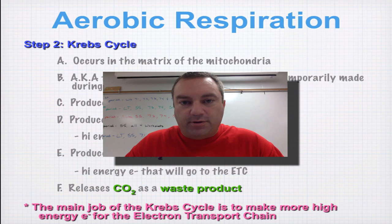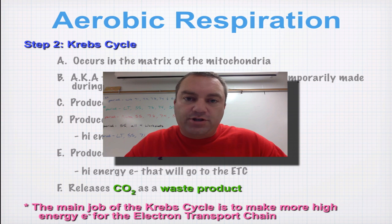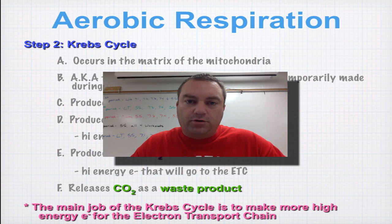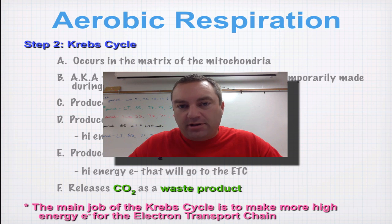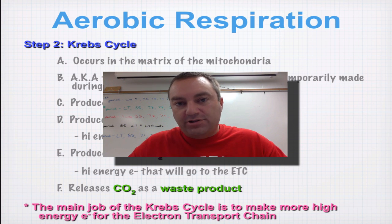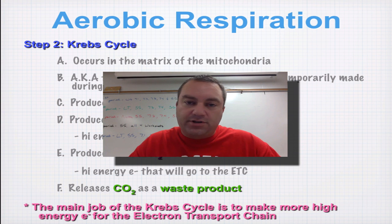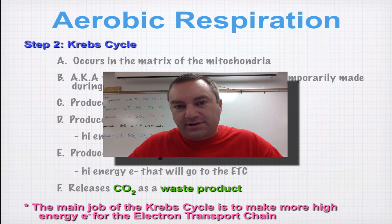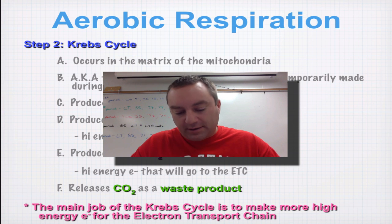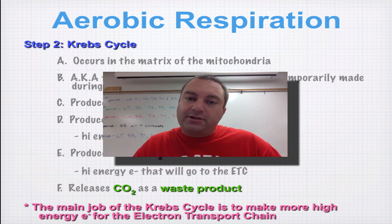Welcome to episode number four from our chapter nine series of screencasts about cellular respiration. In this episode we're going to cover the Krebs cycle, but you're not going to get a college level, International Baccalaureate level, or AP Biology level of detail because our Indiana standards don't want us to go that deep. But there are a number of things you do need to know to help you understand how glycolysis, the Krebs cycle, and the electron transport chain work together to produce ATP.